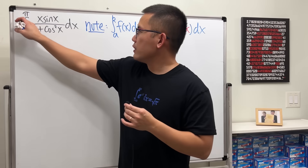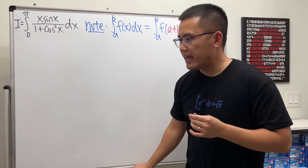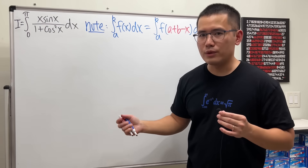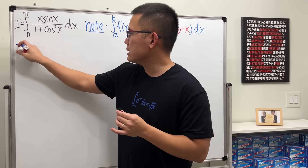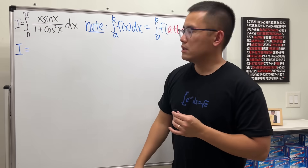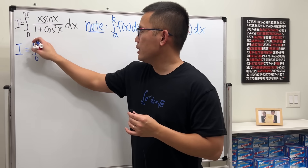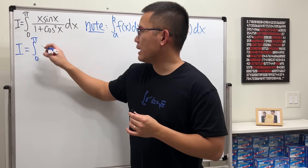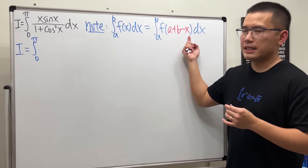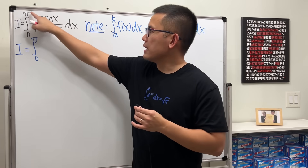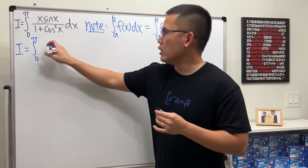Here's the deal: I'll call our original integral I and write down another expression — still I, but it will look different. We're still integrating from 0 to π, but I'm replacing x with a + b − x. Since a = 0 and b = π, we get 0 + π − x = π − x.